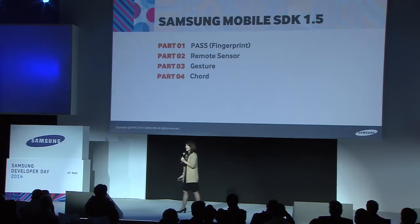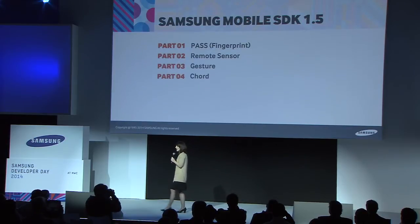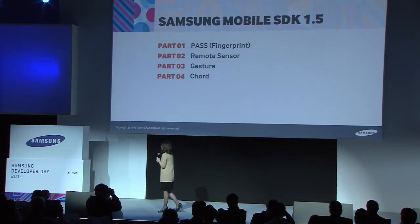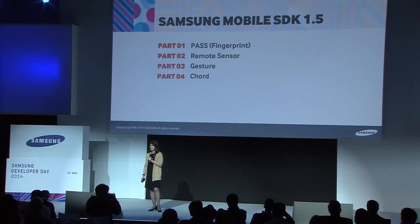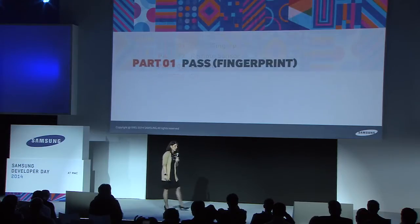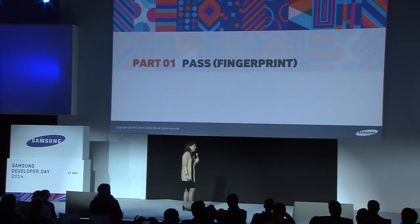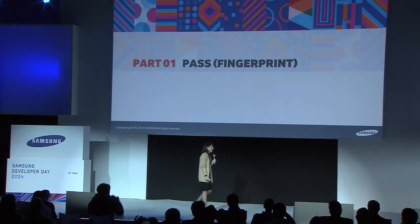The four that are left are what I'm going to cover right now. We've got a thing called password — this is the finger sensor on the front of the new S5 device. We've got a new package called remote sensor. We've enhanced gesture and we've added a new feature to CORD. So let's start with fingerprint.